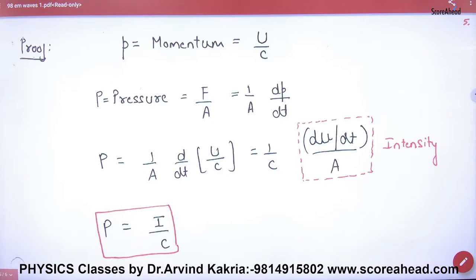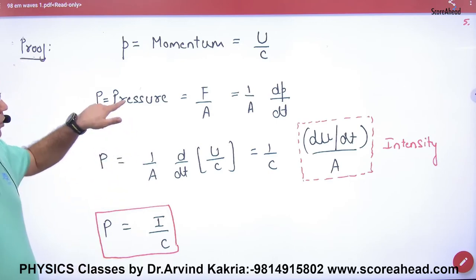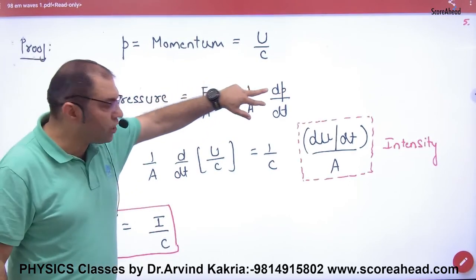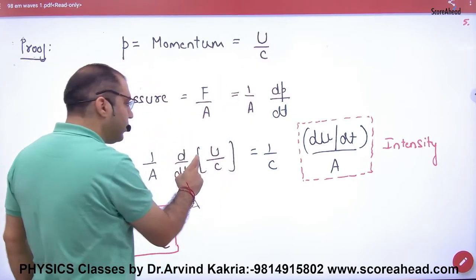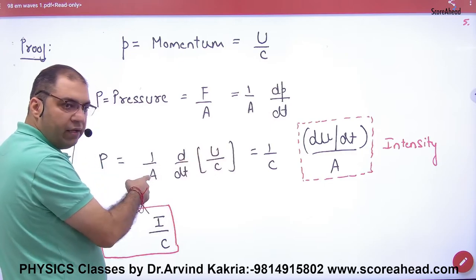And why did this happen? Because when EM wave comes, what is momentum? U by C. And what is pressure? Force by area. What is force? Rate of change of momentum. Momentum, what is momentum? U by C. So P, what do we put in place?